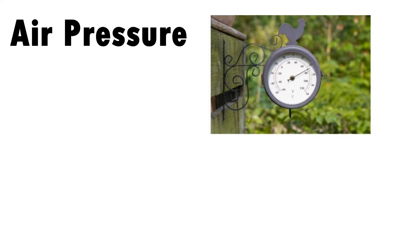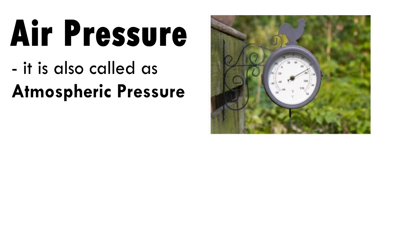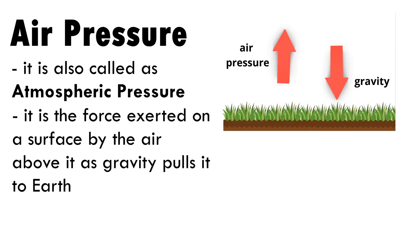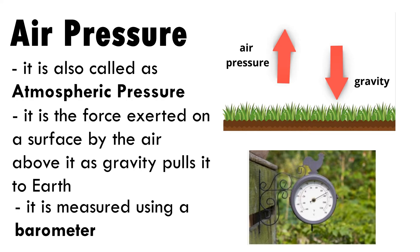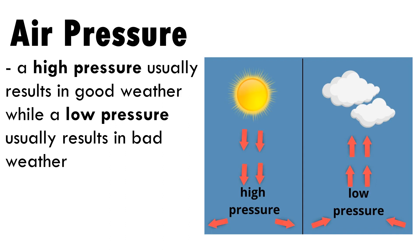Air pressure, also called atmospheric pressure, is the force exerted on the surface by the air above it as gravity pulls it to Earth. It is measured using a barometer. A high pressure usually results in good weather, while a low pressure usually results in bad weather.